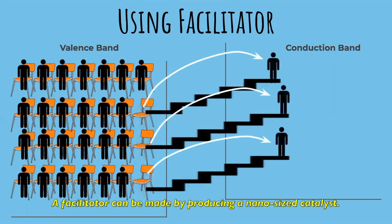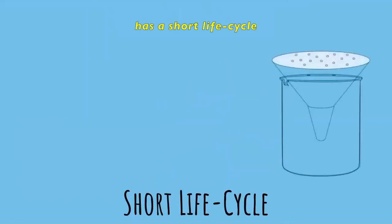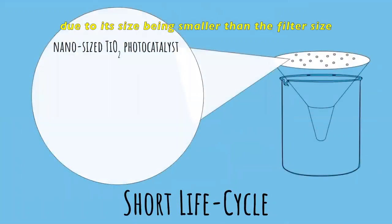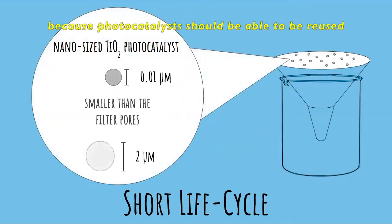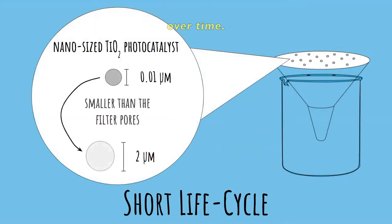A facilitator can be made by producing a nano-sized catalyst, which will make a shorter distance for the electrons to travel. Unfortunately, this nano-sized catalyst has a short life cycle. Due to its size being smaller than the filter size, they have to be filtered over and over again because photocatalyst should be able to be reused over time. This causes some of them to end up in waste.